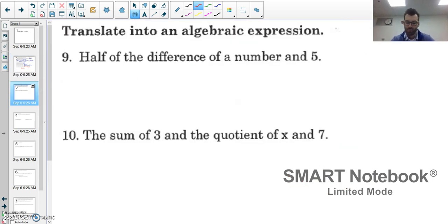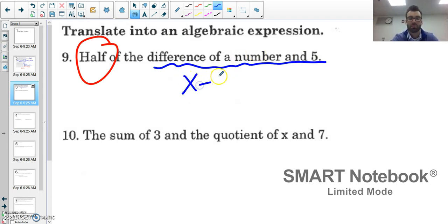Next thing we're going to talk about translating into an algebraic expression from 1.8. Half of the difference of a number and five. So let's break this down. You have half, and then you have the difference of a number and five. I know difference means subtraction, a number means a variable, so the difference between a number and five is x - 5. This half can be written two ways: I can either divide by 2 or multiply by 1/2.